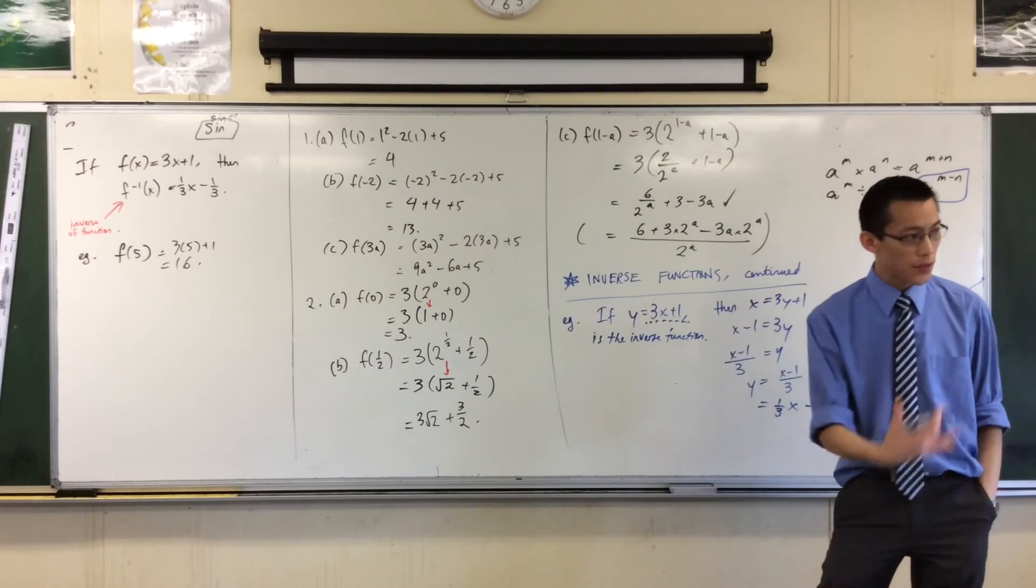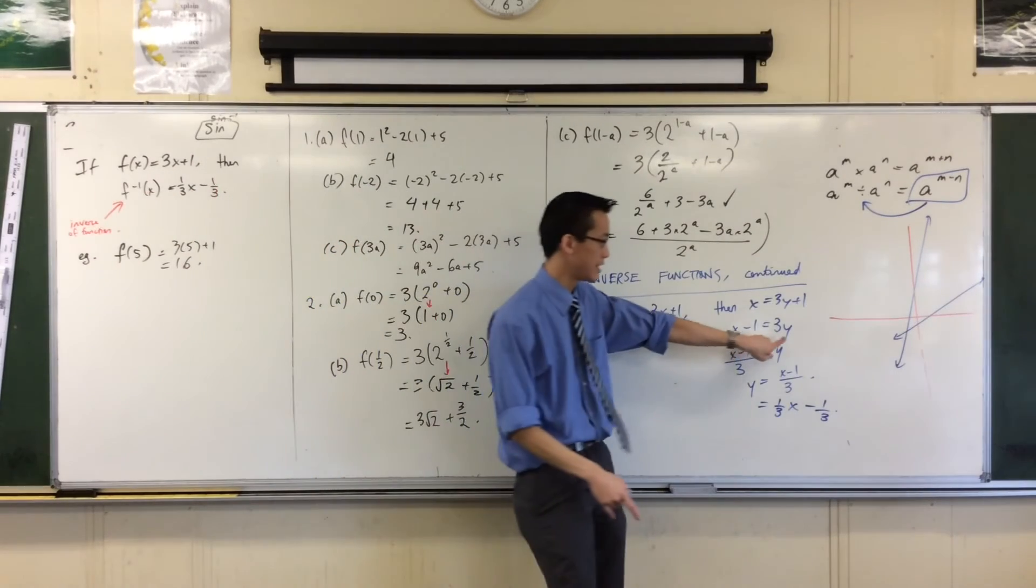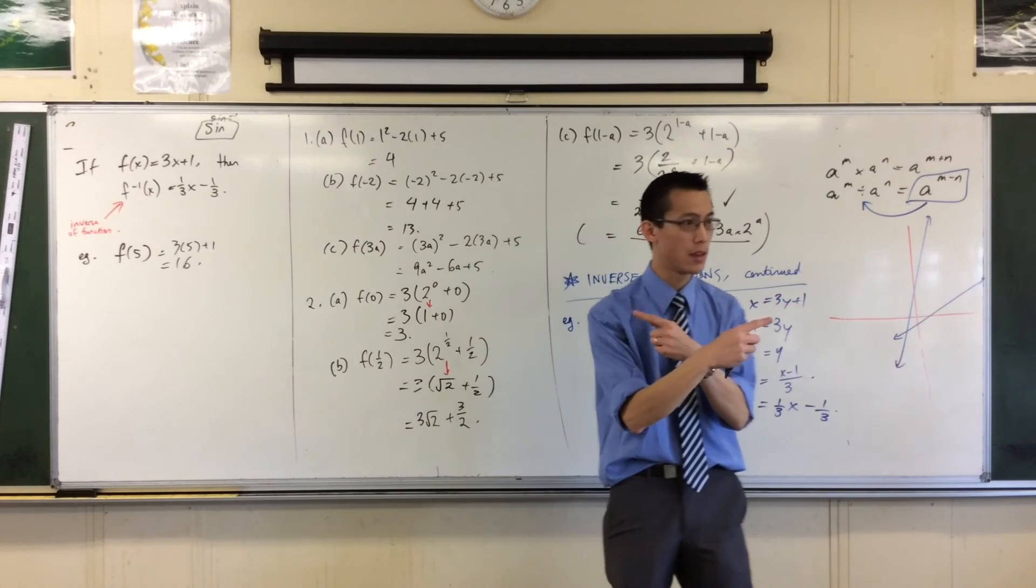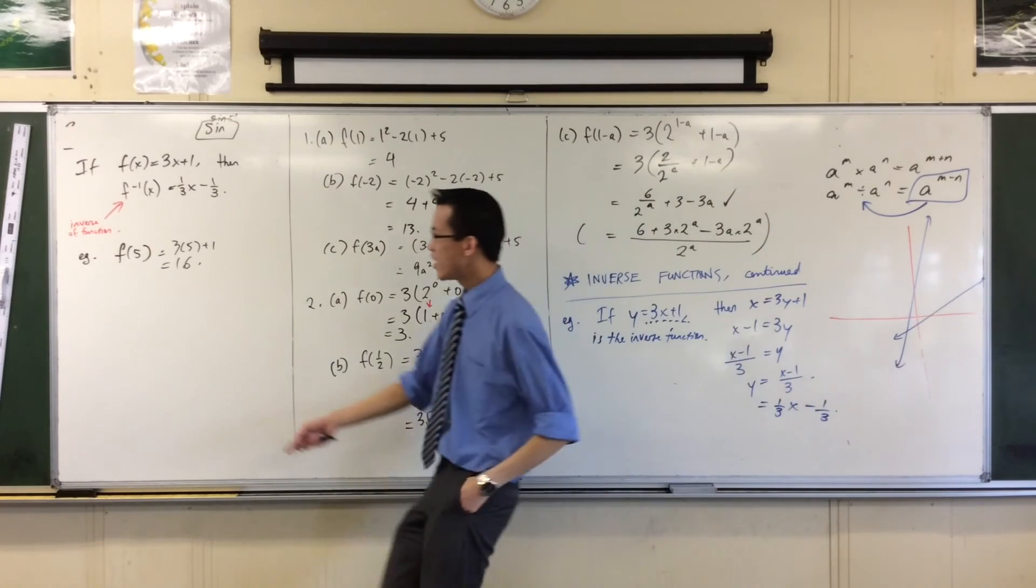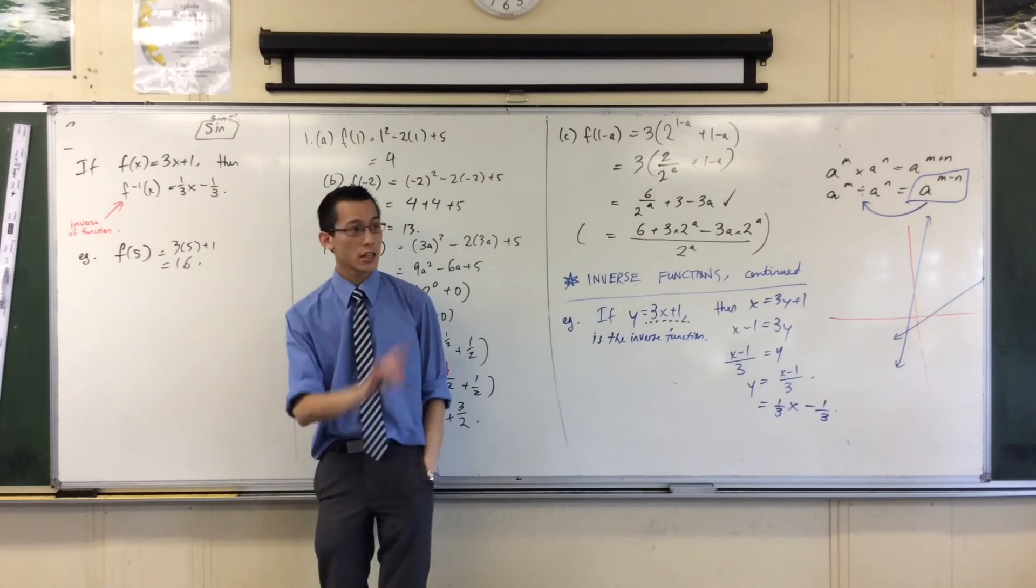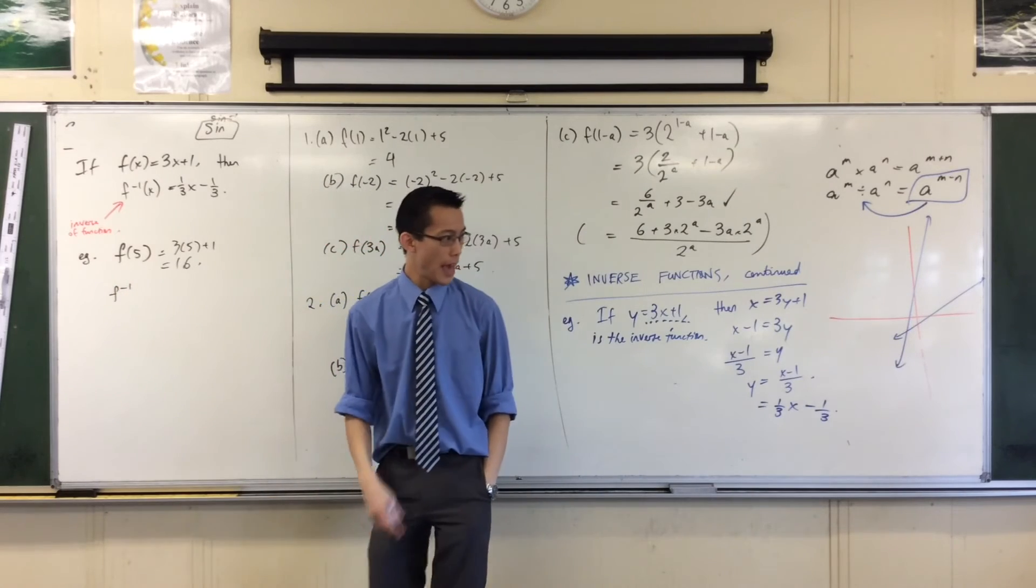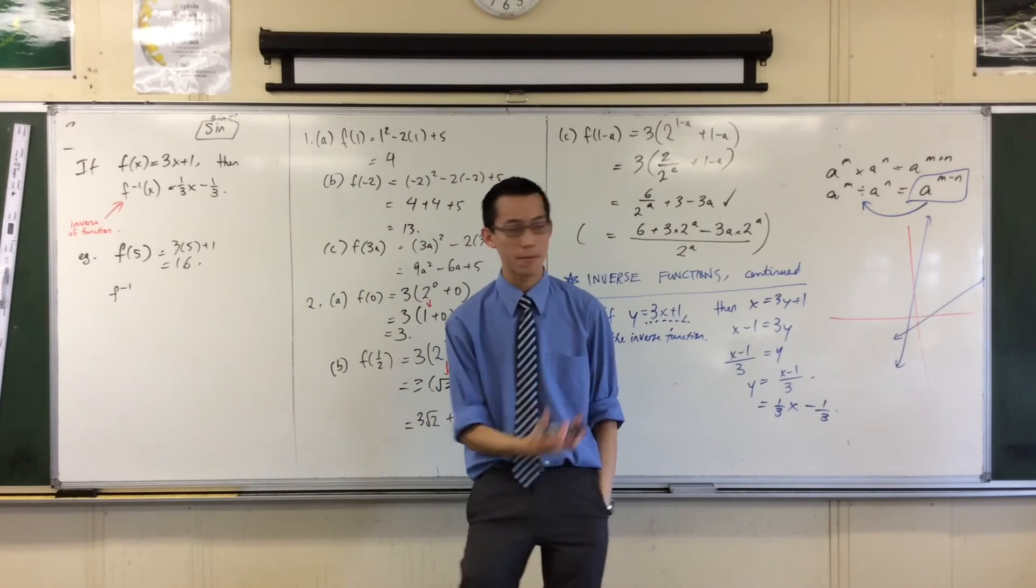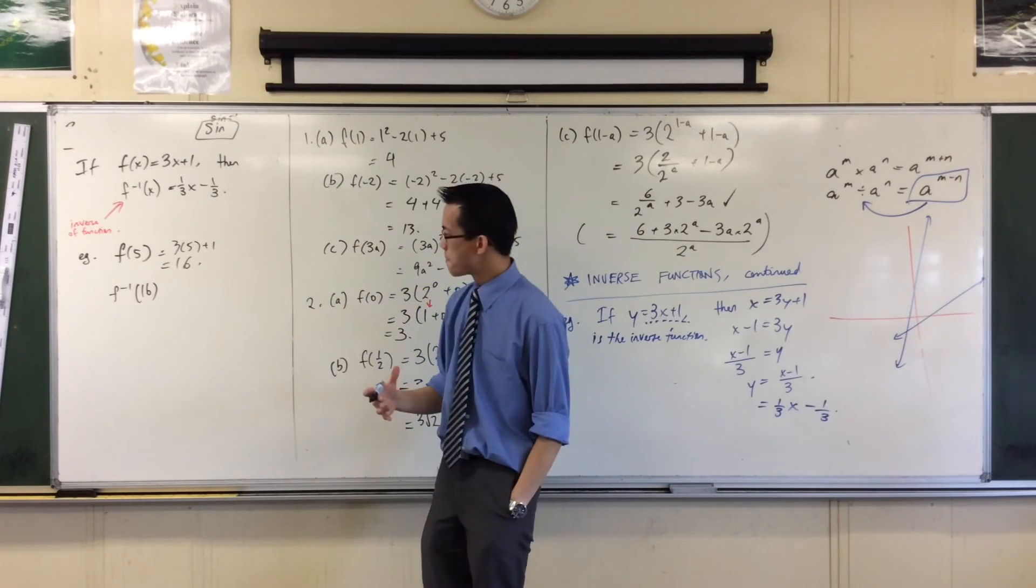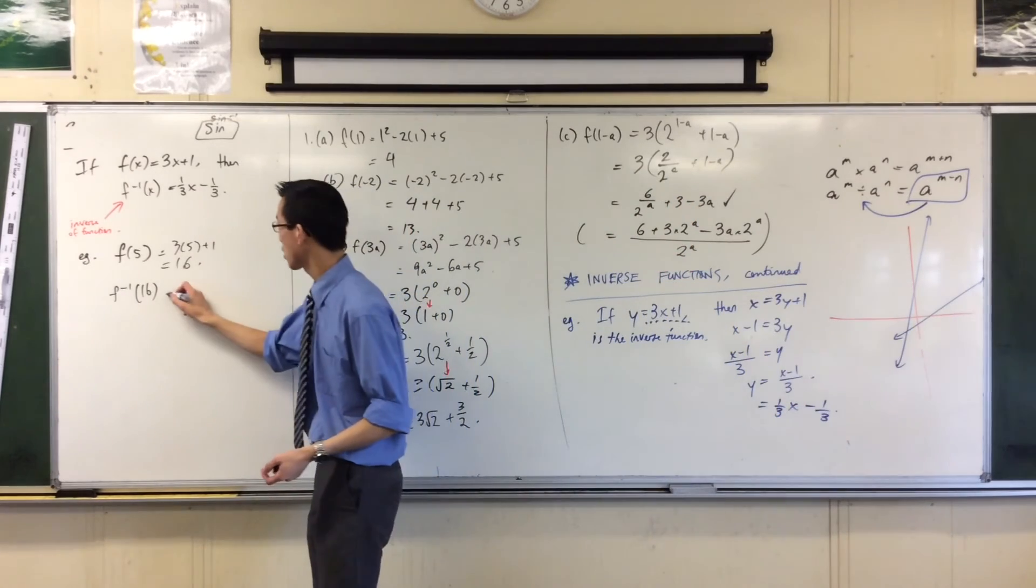Now, the inverse function, what it does is it switches everything around. That's literally what I did. I took the x's and the y's, and I flipped them, I swapped places. So, therefore, what this means is, instead of taking an input and giving you an output, it's going to do exactly the reverse. Watch. If I say f inverse, and I take what was the output, which you just told me it was 16, I should be able to get back to the input if I've done the function correctly. Let's give it a go.